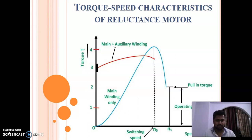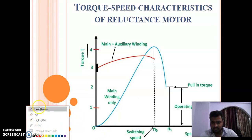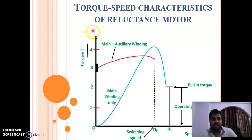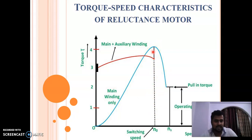Now let us take the speed-torque characteristics of the reluctance motor. On the y-axis we have torque and on the x-axis we have speed. At zero speed the slip will be unity, and at speed equal to synchronous speed the slip is zero. At the time of starting, both main and auxiliary windings are energized and the characteristics follow a certain curve. At approximately 70 to 80 percent of synchronous speed, the centrifugal switch opens and only the main winding remains, shown by its own characteristic curve.